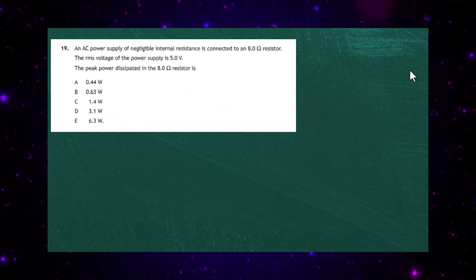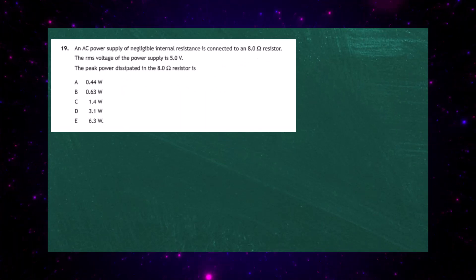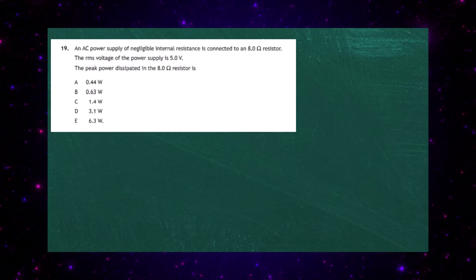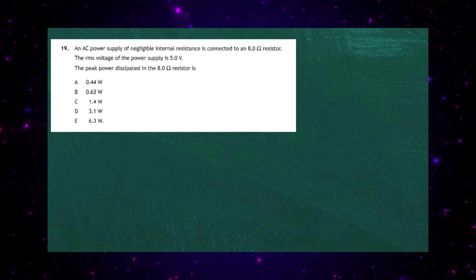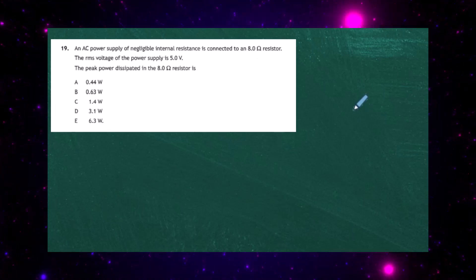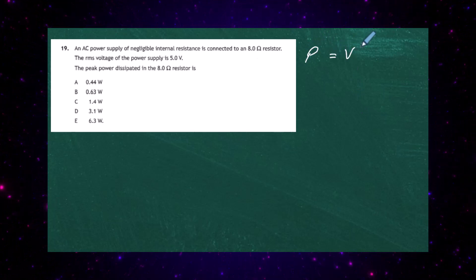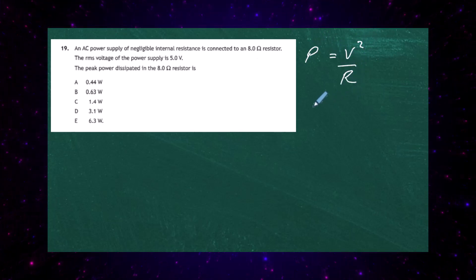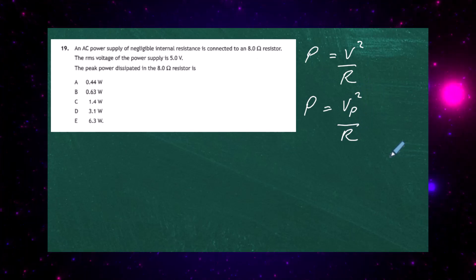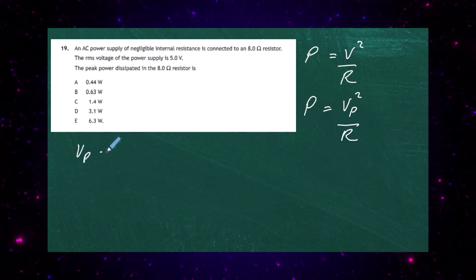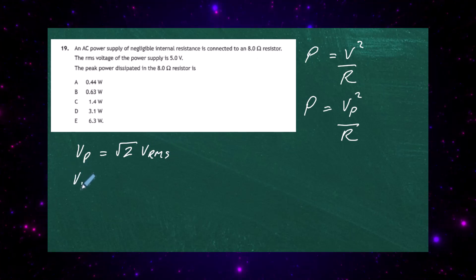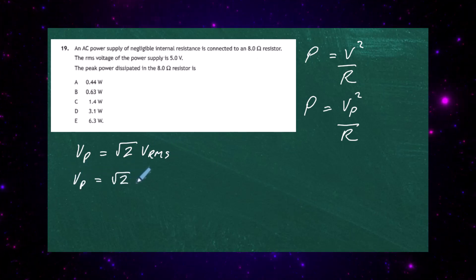Question 19 from Paper 1 of the 2023 Higher Physics Examination. An AC power supply of negligible internal resistance is connected to an 8 ohm resistor. The RMS voltage is 5 volts and we're asked to find the peak power dissipated. From the power equations, power equals V² divided by R, so peak power equals the peak voltage squared divided by R. We also know that the peak voltage equals root 2 times V_RMS.